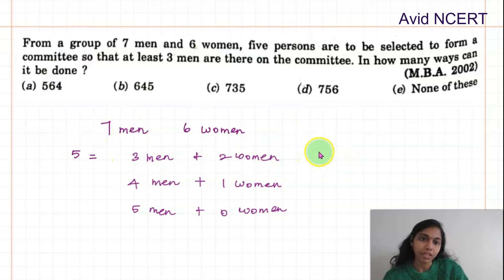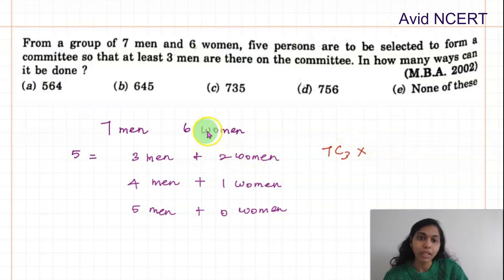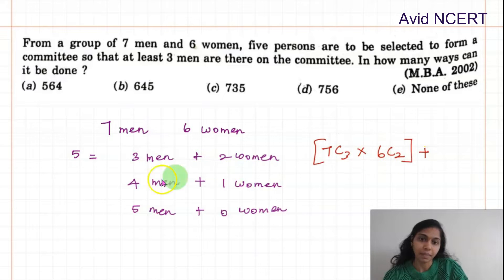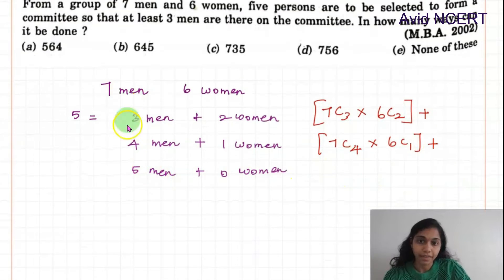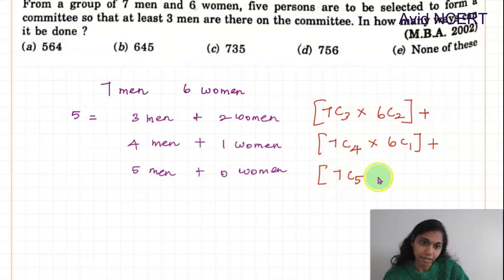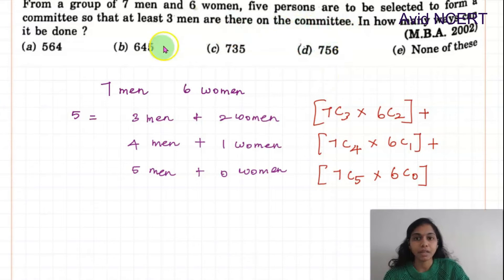The combination expression is: 7C3 × 6C2, plus 7C4 × 6C1, plus 7C5 × 6C0. That is, three men out of seven times two women out of six, plus four men out of seven times one woman out of six, plus five men out of seven times zero women out of six.